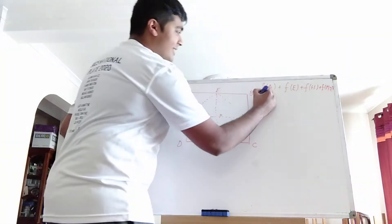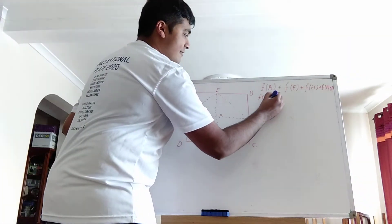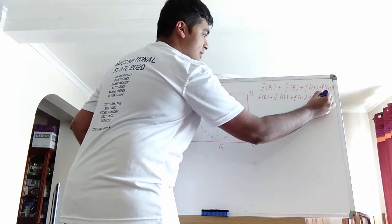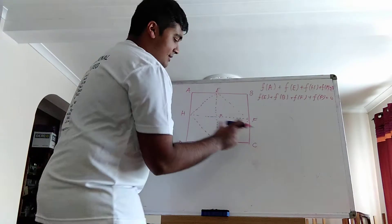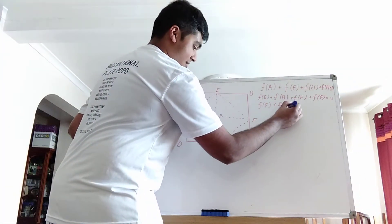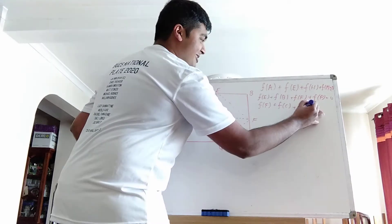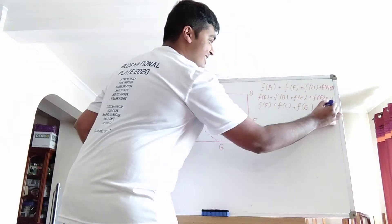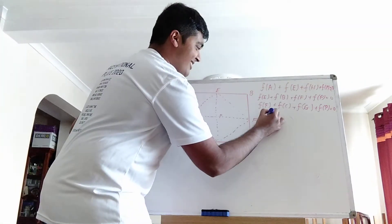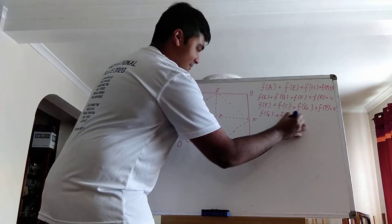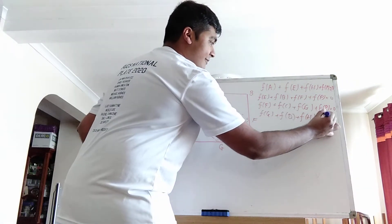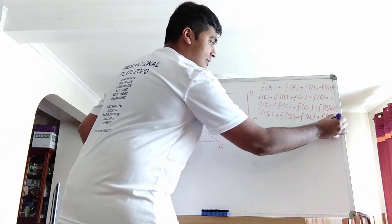And this one here, same thing, f(e) + f(b) + f(f) + f(p) equals zero. Same thing with this square and this square. So f(f) + f(c) + f(g) + f(p) equals zero. This square here, f(g) + f(d) + f(h) and then plus f(p) equals zero.